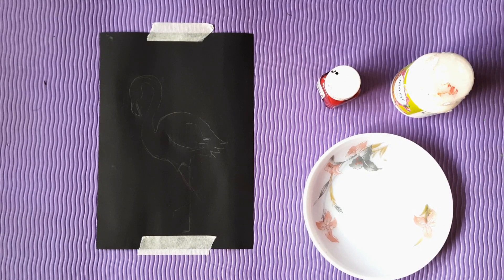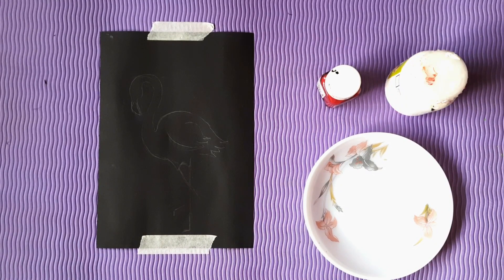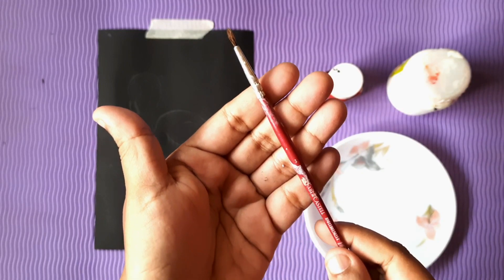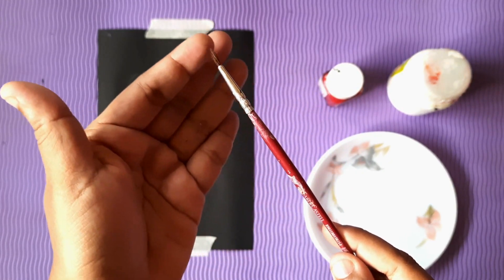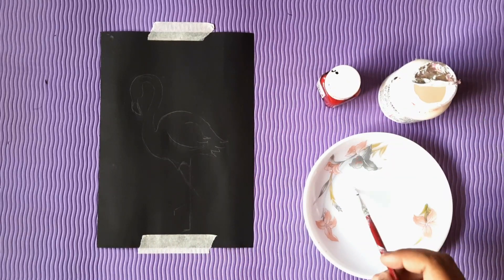Now that I am happy with the outline, what I will do is I will just trace it with white acrylics using this Faber Castell No. 2 brush. If you have a zero number brush, that would be really great. But my zero number brush is completely destroyed, so I have to use this.